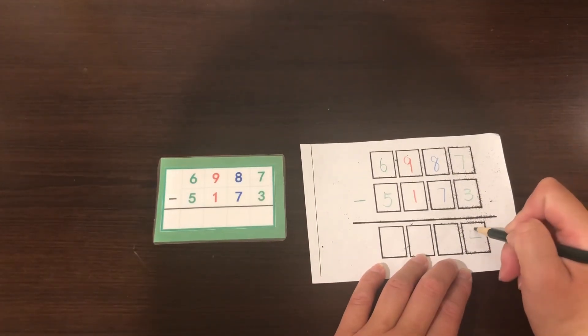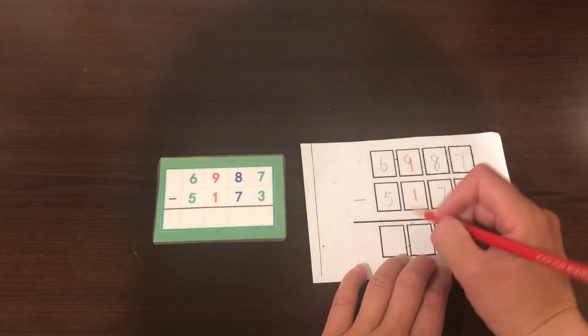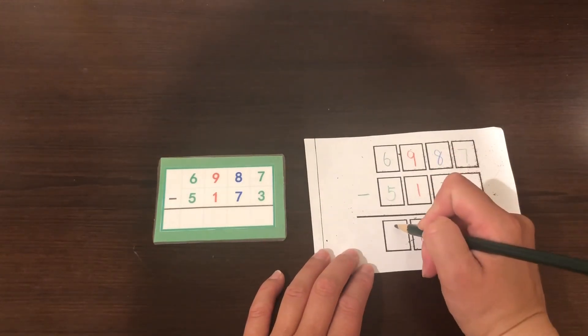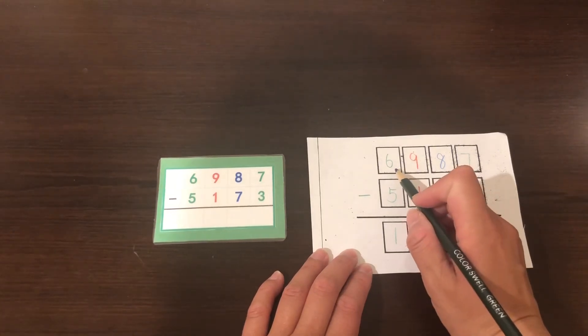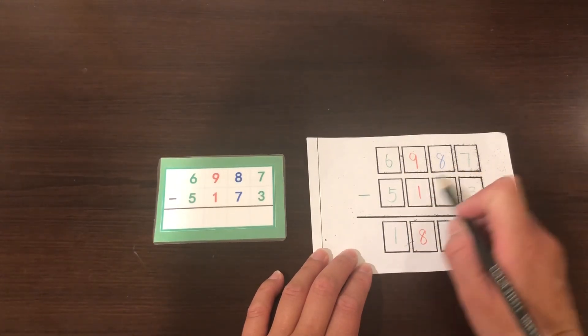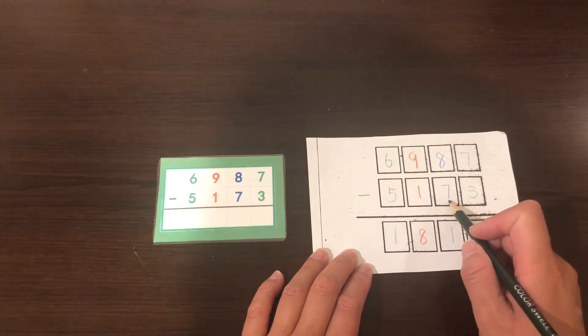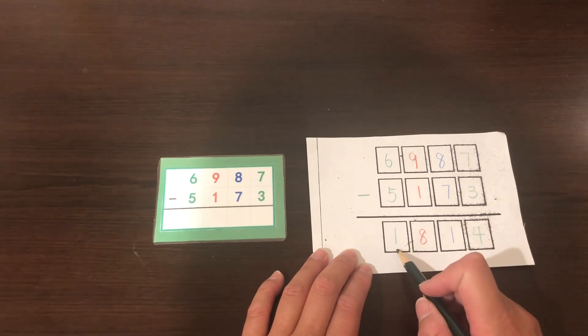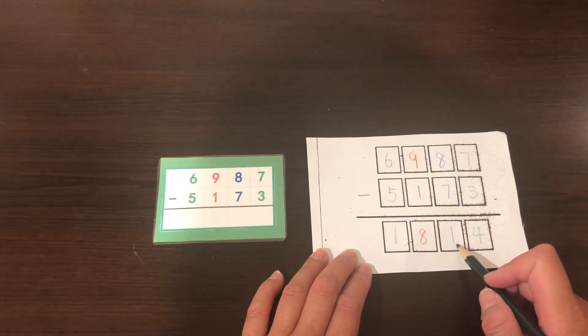4 units, 1 ten, 8 hundred, 1,000. So 6,987 minus 5,173 equals 1,814.